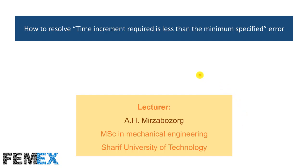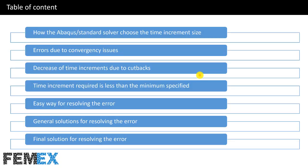Hi, I'm Amir Hussain Mirza Bozorg, and in this video I want to talk about how to resolve the 'time increment required is less than the minimum specified' error. The table of contents covers: how the Abaqus standard solver chooses the time increment size, errors due to convergency issues, decrease of time increments due to cutbacks, easy ways for resolving the error, general solutions, and final solutions.